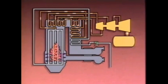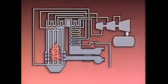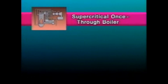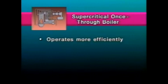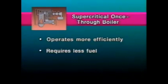The components in the steam flow path are generally the same for supercritical boilers and subcritical boilers. The main advantage of a supercritical once-through boiler is that it operates more efficiently than a subcritical boiler that has to recirculate water in the process of producing steam. A supercritical once-through boiler requires less fuel than a drum-type boiler of the same size to produce the same amount of steam.